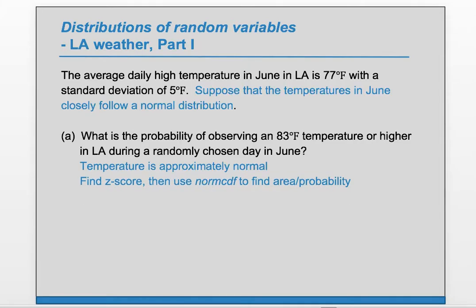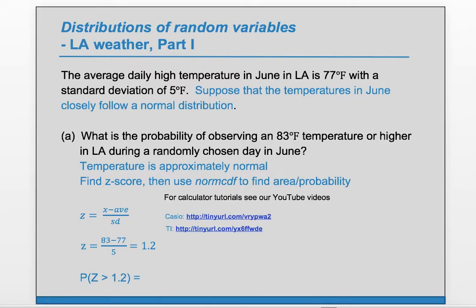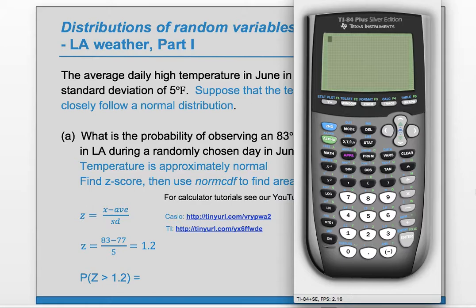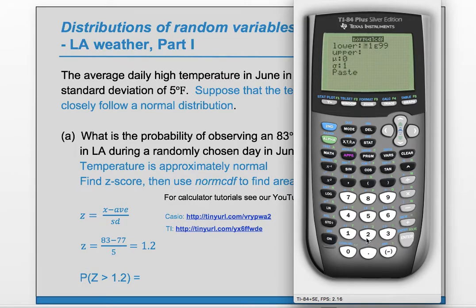Let's take part A first. We observe the temperature is normal and now let's find the z-score. We know z equals x minus the average over the SD. So in this case z equals 83 minus the average of 77 divided by the SD of 5. That is 1.2. Because it's normal we can find the area under the normal curve to the right of z equals 1.2, since we want this temperature or higher. We'll use the TI — go to second distribution or second VARS and choose number two which is norm CDF. Our lower bound is 1.2 and our upper bound is some very big number, say six.